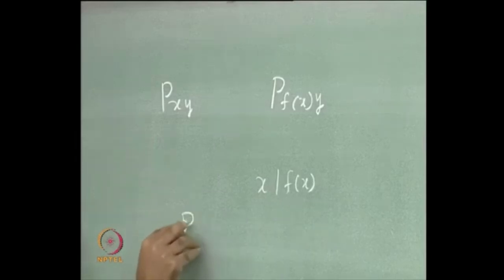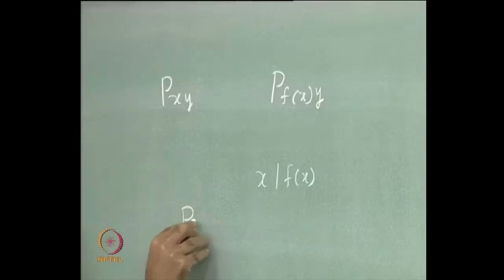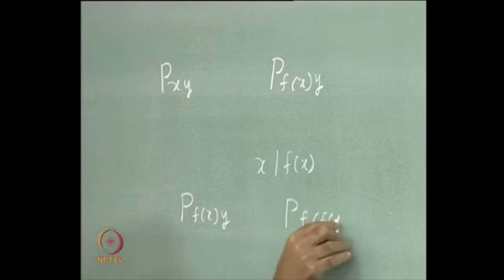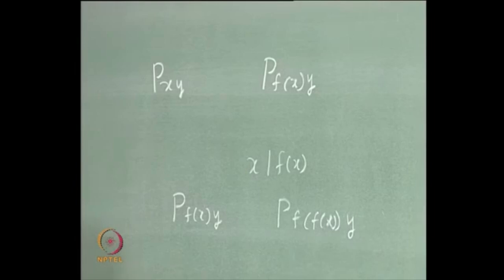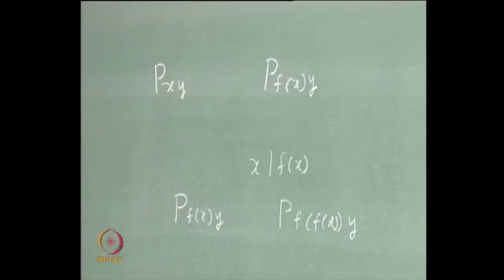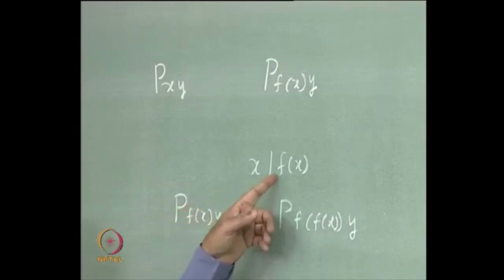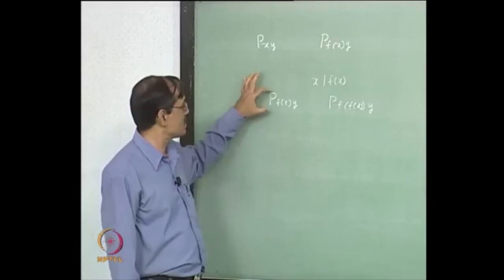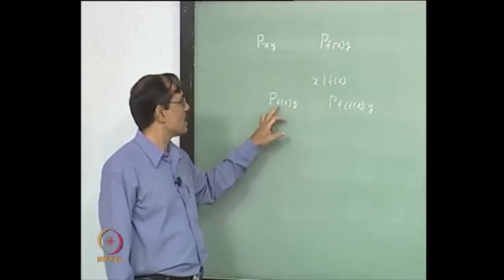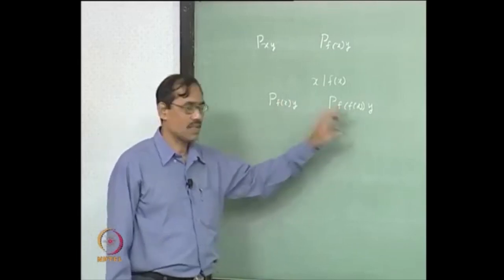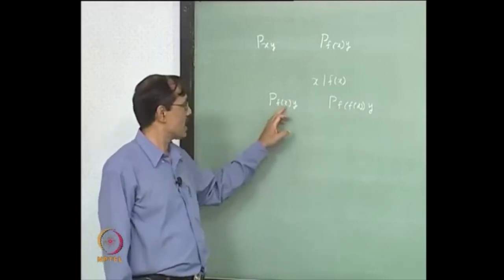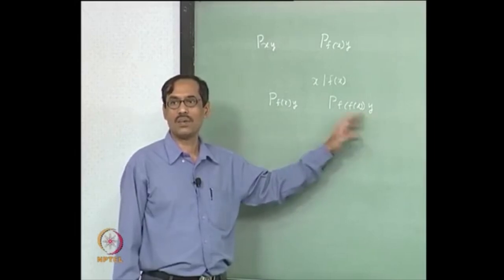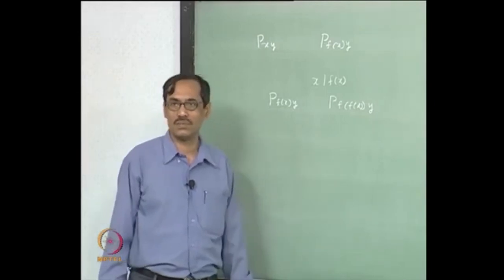Then it updates the formulas, updates the literals to f(x), y and P(f(f(x)), y). It does not mark that place to omit it and then go for the next mismatch — it again starts from the beginning. So it sees that P is there, P is there, it matches. Now f, f is there, it matches, parenthesis matches. Now x and f(x). So you see the danger — it will go on looping over there. It will never be able to come out.